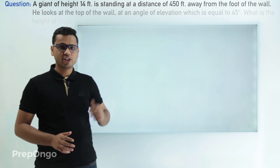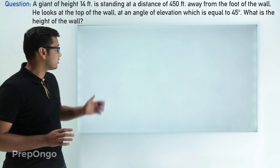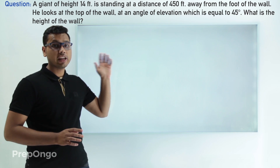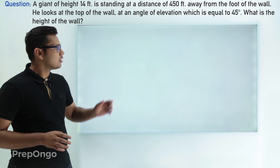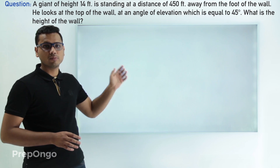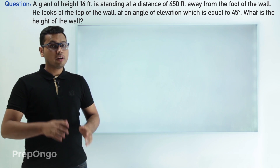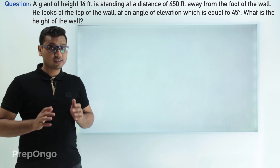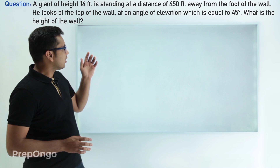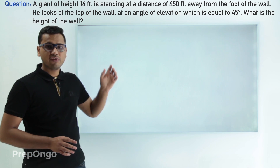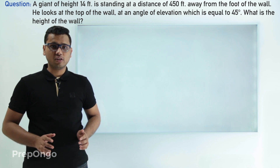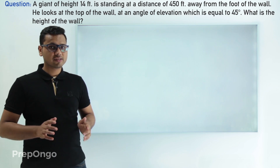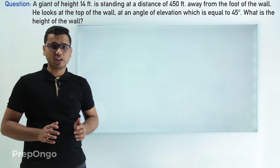Hello everyone. Let's have a look at this question. This question says that there is a giant 14 feet tall and it is standing 450 feet from the foot of the wall. Now if we look at the top of the wall, the angle of elevation is given to be 45 degrees. Then we have to find the height of the wall. To visualize this question, let me tell you a small story.